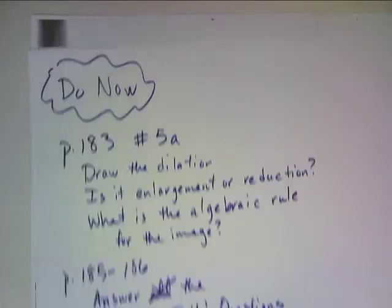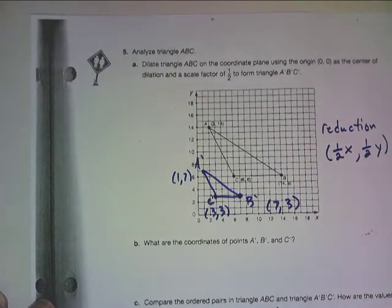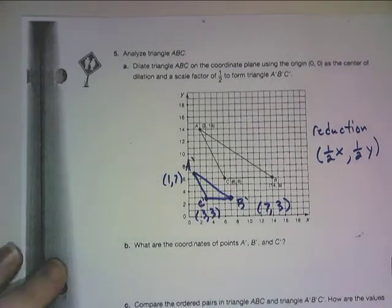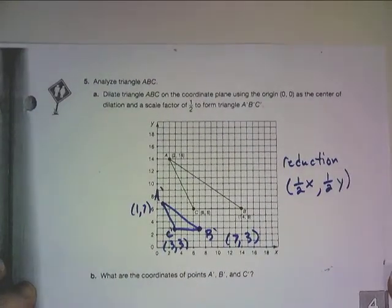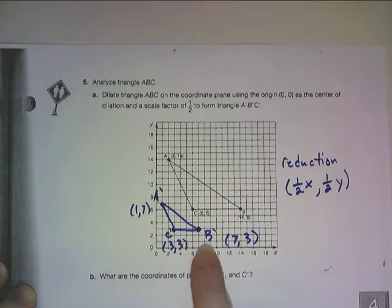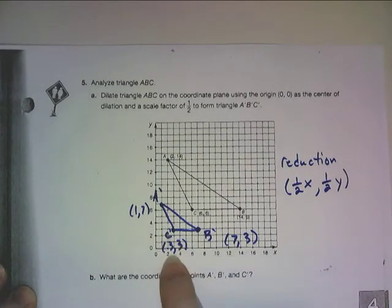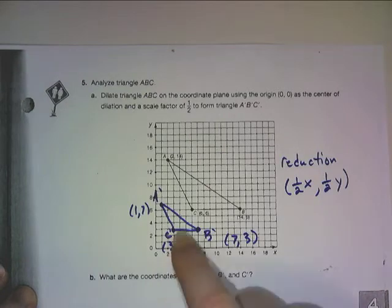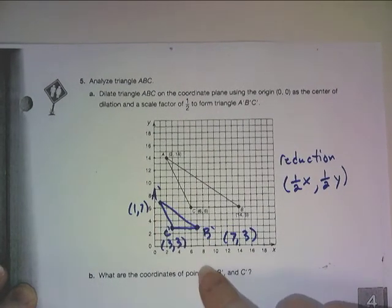All right, let's see how we did. So on page number 5, sorry, on number 5 on page 183, this is what you should have created. So A prime is at 17, B prime is at 73, and C prime is at 33. So this triangle is our image, A prime, B prime, C prime.